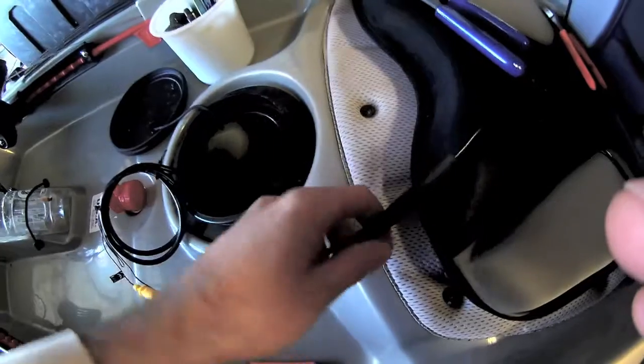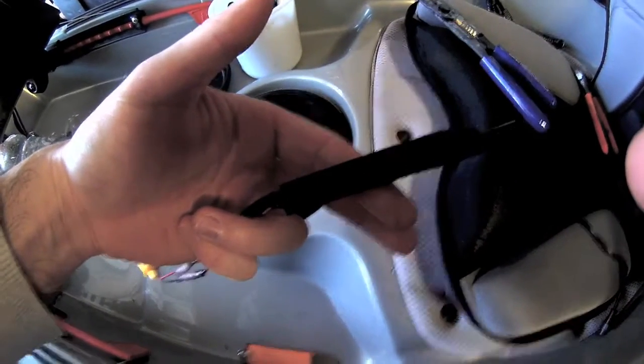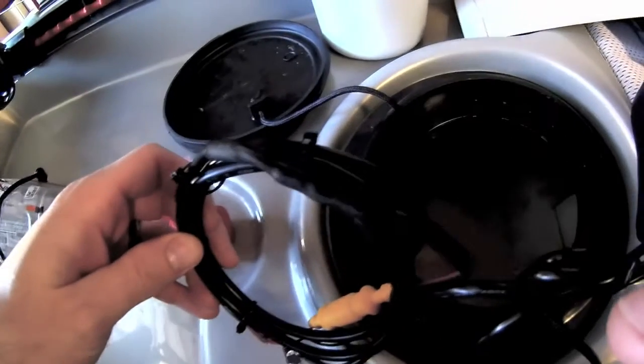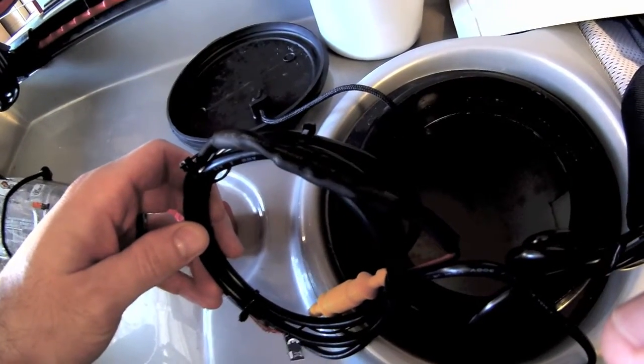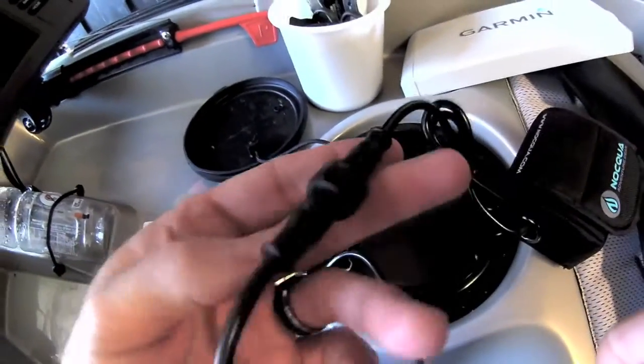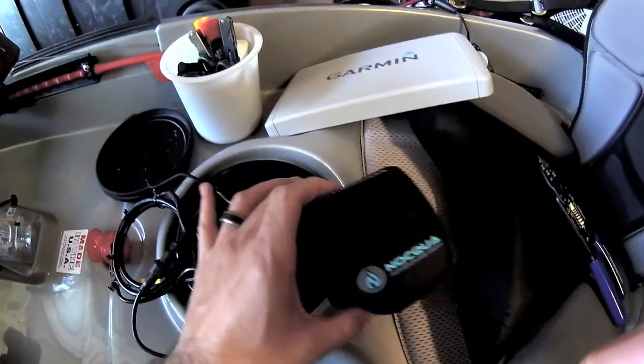Last thing to do - take the heat shrink tubing, marine grade stuff, slide it over the connectors and seal it all up. So we'll get that done. Alright, so we got the heat shrink installed. That stuff works pretty good. Got the battery hooked up and the battery pack.